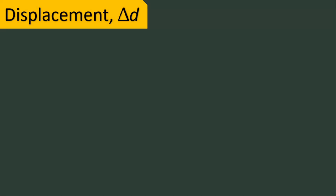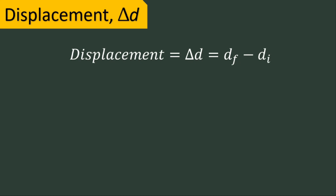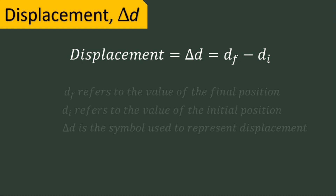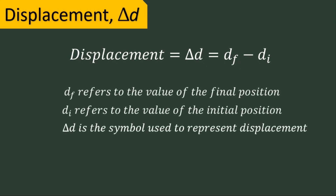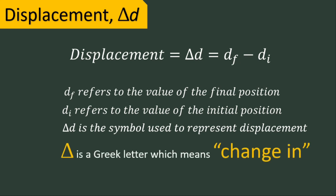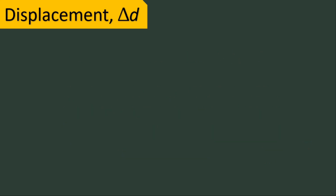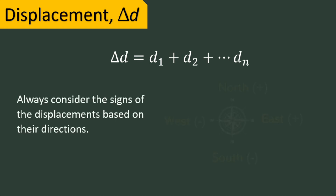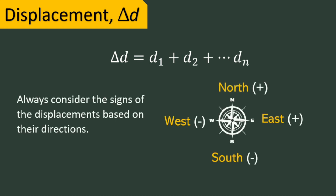In equation, displacement or delta d is equal to d sub f minus d sub i, where d sub f refers to the value of the final position, d sub i refers to the value of the initial position, and delta d is the symbol used to represent displacement. Delta is a Greek letter which means 'change in.' You can also determine the displacement vector by solving for the sum of the displacements of an object. When using this equation, always consider the signs of the displacements based on their directions.